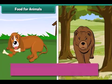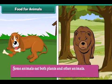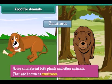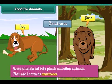Some animals eat both plants and other animals. They are known as omnivores. Examples of omnivores are bears, dogs, etc.